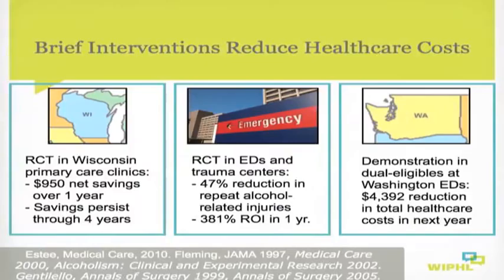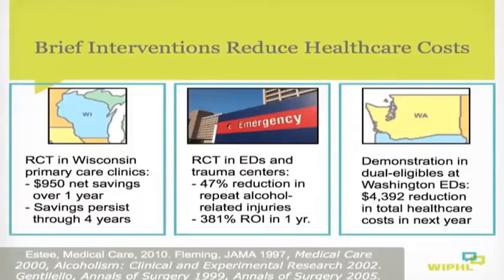A third study was conducted at Washington State emergency departments and focused particularly on dual eligible patients — those covered by Medicare and Medicaid. That study showed more than a $4,000 reduction in healthcare costs per patient over the next year. So brief interventions can not only improve patient health outcomes, but also reduce healthcare costs.